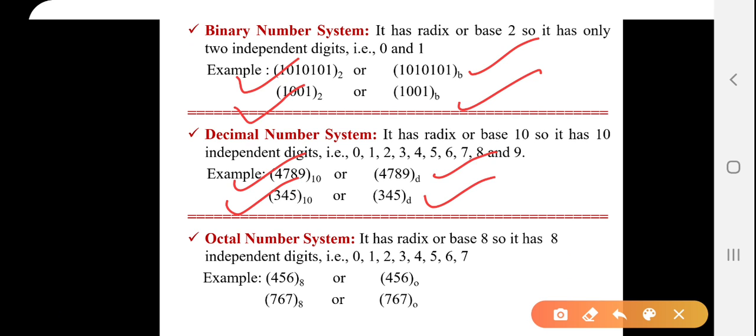In case of octal number system, it has radix or base 8, so it has 8 independent digits right from 0 to 7. For representing the octal number system, we write 8 in the base of 456 and also in the base of 767. Instead of writing 8, we also can write O as a base.